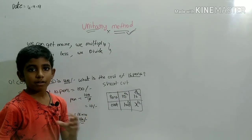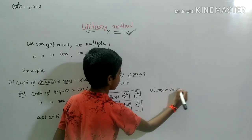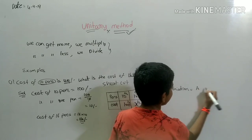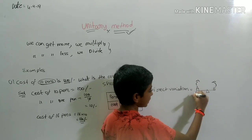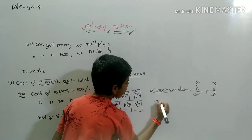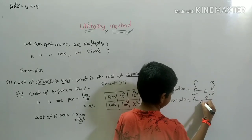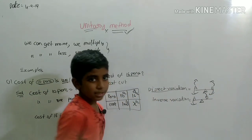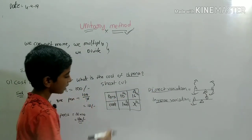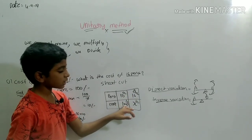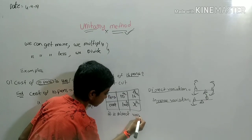Now we check if this is direct or inverse variation. Direct variation means if A is higher, B is also higher; if A is lesser, B is also lesser. Inverse variation means if A is less, B is high. Here, pens increase from ten to sixteen, so cost also increases — this is direct variation.